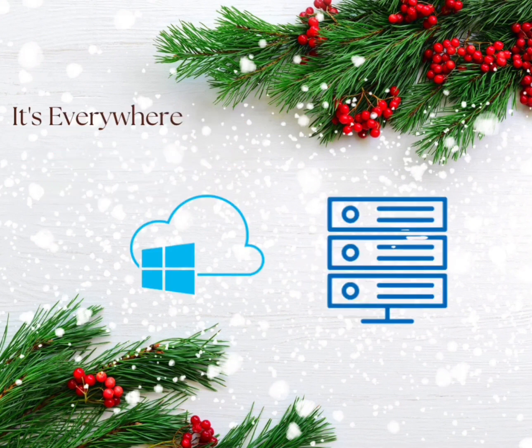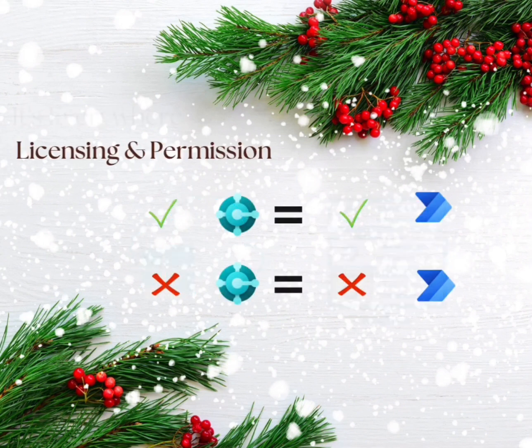The ability to create a record in Business Central with Power Automate is possible with both the SaaS and on-prem connector. You need to have the right license and permission in Business Central to create records in Power Automate, or you will receive an error message.